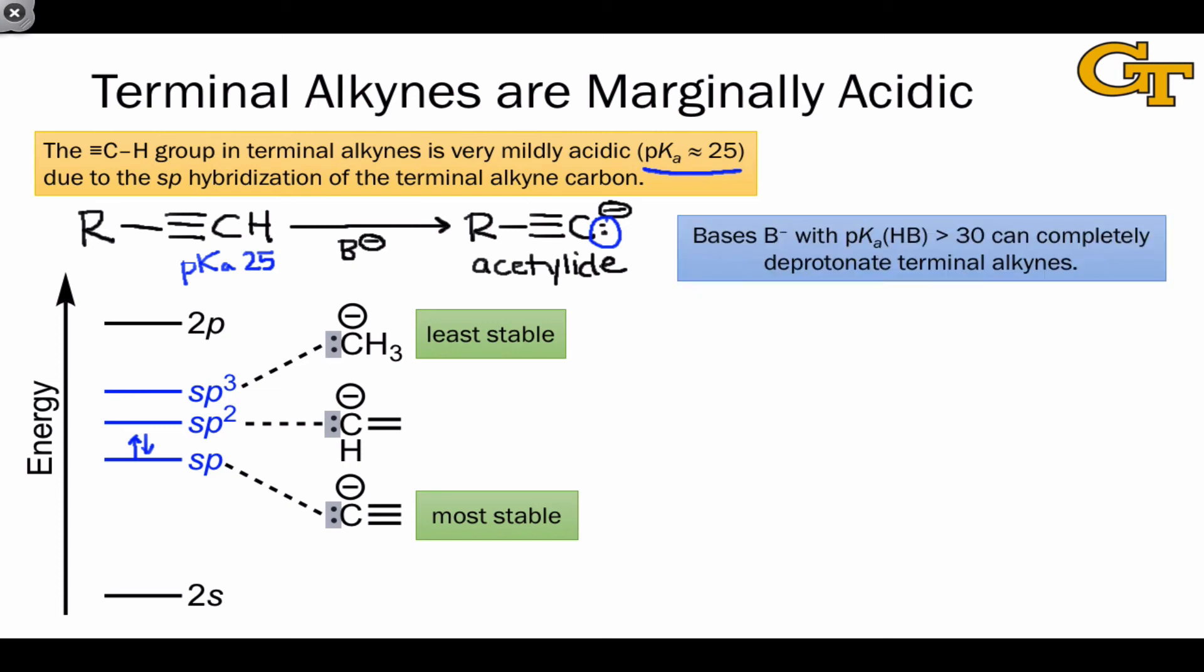Because the pKa of the terminal alkyne proton is about 25, any base whose conjugate acid has a pKa greater than 30 can completely deprotonate a terminal alkyne. And by completely deprotonate here, if you do the math on the Ka values, you'll see that with a pKa of the conjugate acid greater than 30, the overall equilibrium constant for this deprotonation is going to be greater than 10,000.